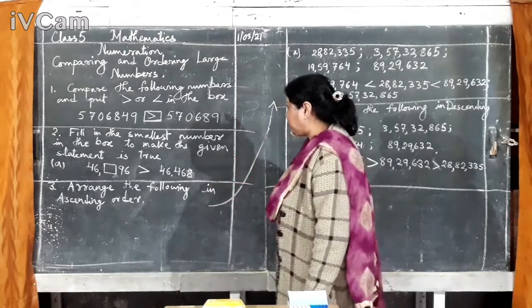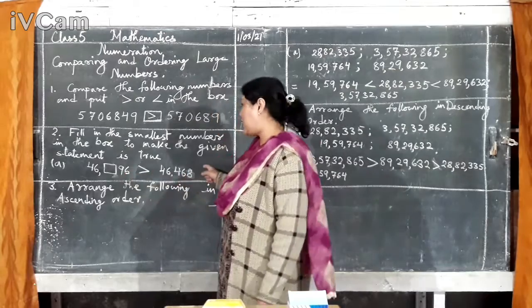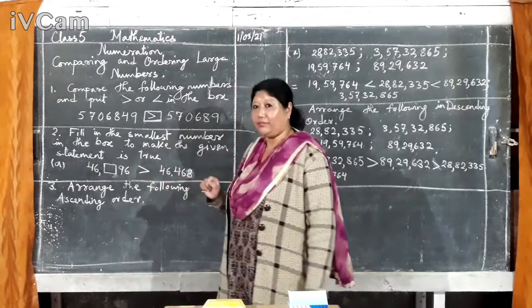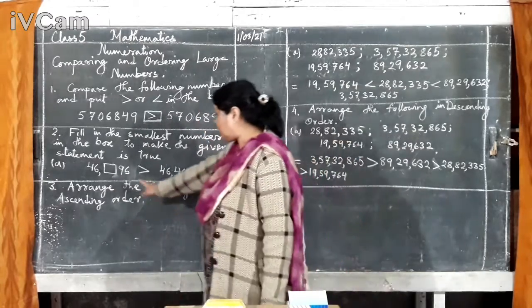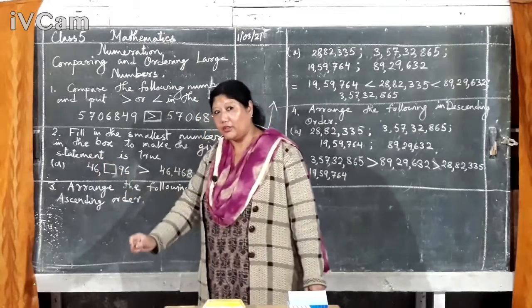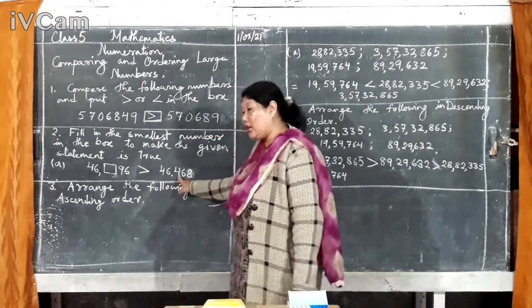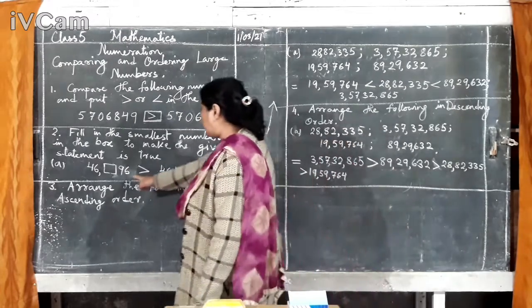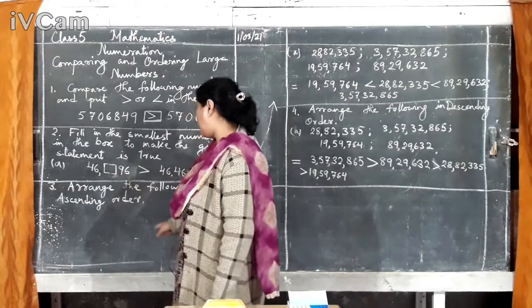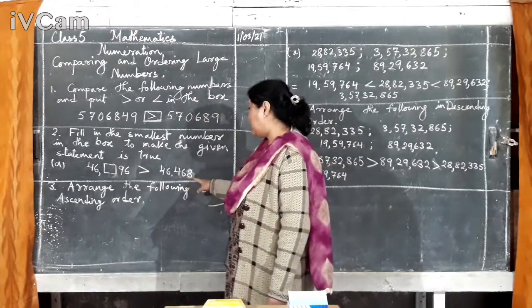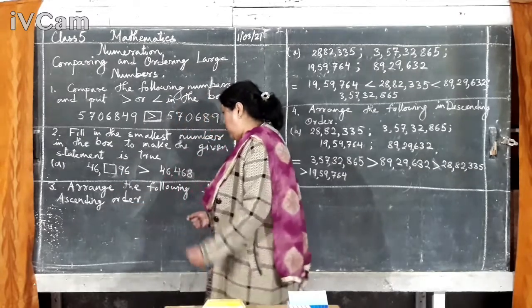Like that, you have to find out which number is bigger. So, at first, this one is bigger. I am putting this side. This one is bigger. Now, the second one is, fill in the smallest number in the box to make the given statement true. Now, here you can see this expression. This one is bigger than this one. But, this place is empty. So, which number if you put, then this number becomes bigger than this.